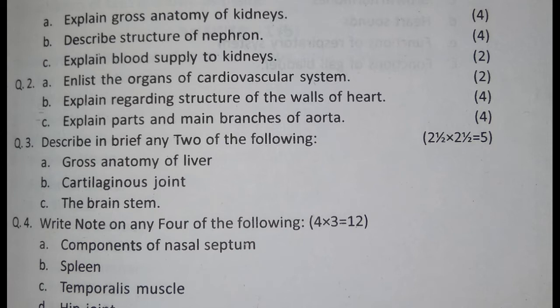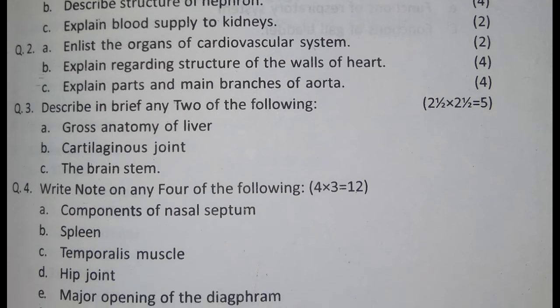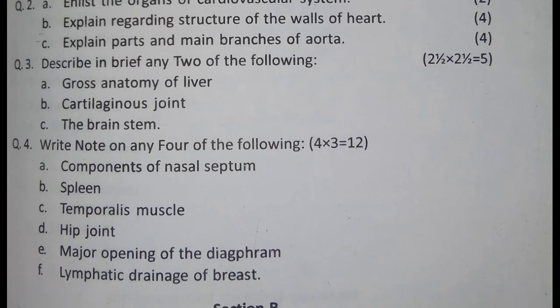Question number 4: Describe in brief any two of the following, 1 and a half marks each. Next: the brainstem, 2 and a half marks. Write notes on any four of the following, 2 and a half marks each: components of nasal septum, the spine, 3 and a half marks, temporalis muscles and hip joint, major openings of the diaphragm, 4 and a half marks, and drainage of breast.